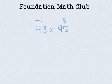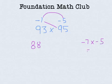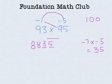Cross and add. 95 minus 7 gives us 88. Multiply. Minus 7 into minus 5 gives us 35. Since the base is 100, I should have 2 digits here in the third step. And I got 35. So our answer is 8,835.